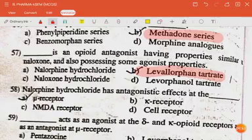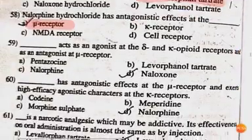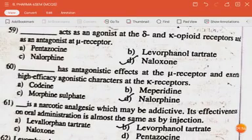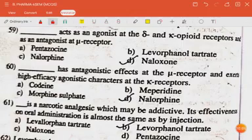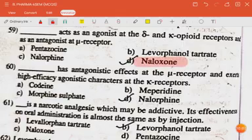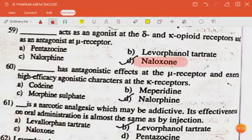Morphine hydrochloride has antagonistic effects at the mu receptor. Dash acts as an agonist at the delta and kappa opioid receptor and as an antagonist at the mu receptor — the answer is naloxone. Dash has antagonist effects at the mu receptor and exerts high efficacy agonistic effects at the kappa receptor — the answer is nalorphine.